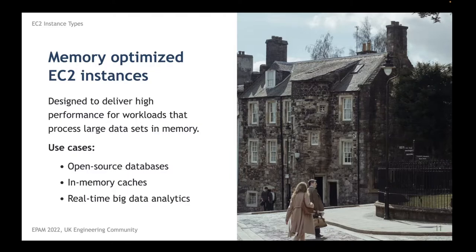On the other hand, if your workload requires a lot of memory but is not so CPU-hungry, you can look at the memory-optimized EC2 instance type. Many types of databases can store all data in memory and work much faster that way. So if you have a big in-memory cache or a large MongoDB or any other kind of database, you can try the memory-optimized EC2 instance type — you'll have a little fewer vCPUs but much more memory.